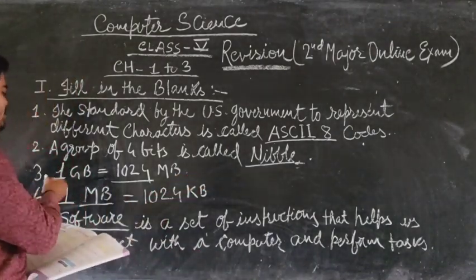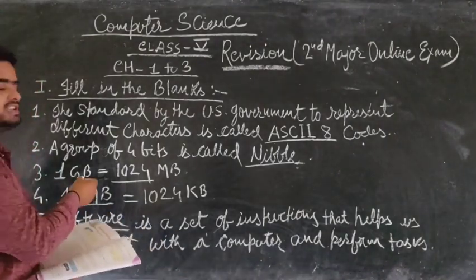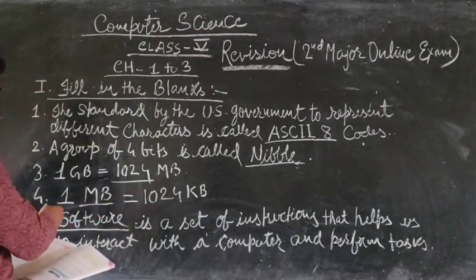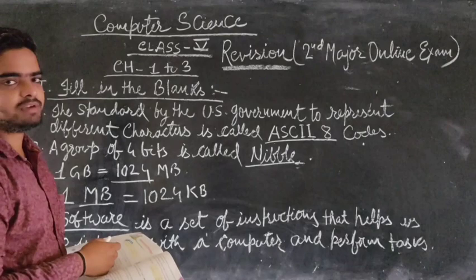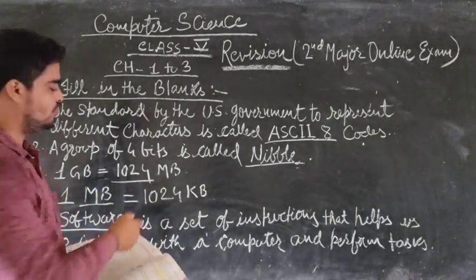Question 3: 1 GB is equal to dashed MB. So 1 GB is equal to 1024 MB. Question 4: 1 dashed is equal to 1024 KB. So 1 MB is equal to 1024 KB.